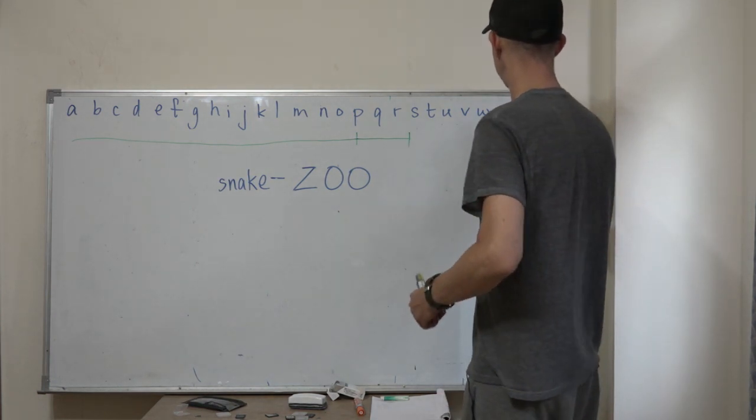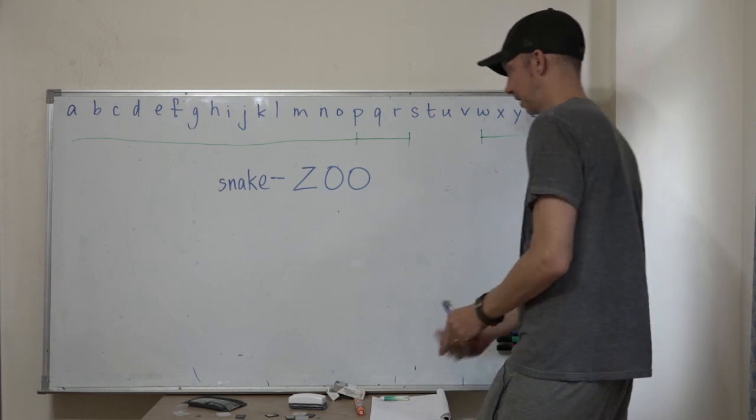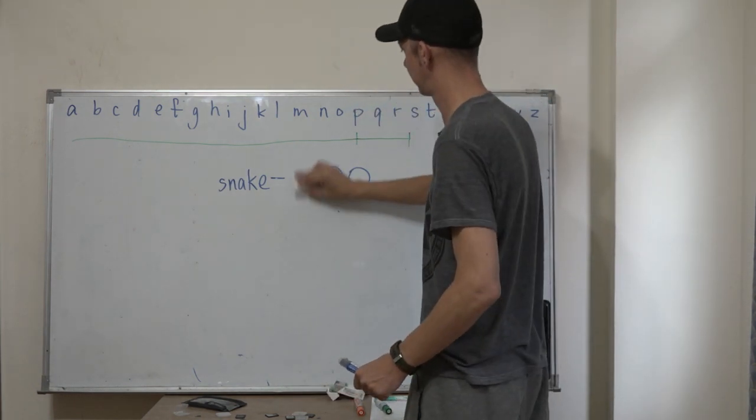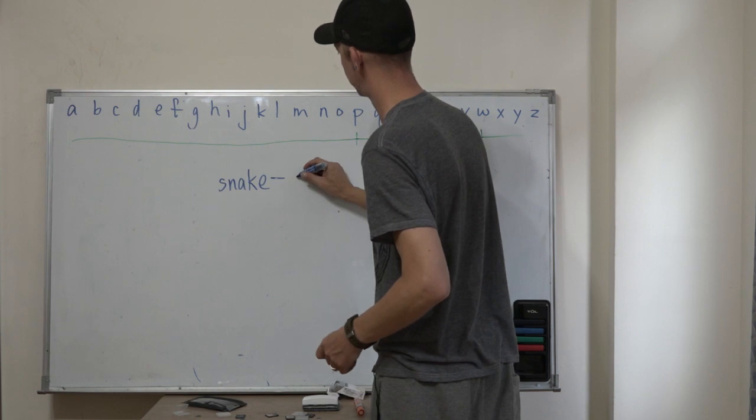Woman. Woman. Okay. No, that's not, that's too far. So now I can erase zoo and my word is between snake and woman.